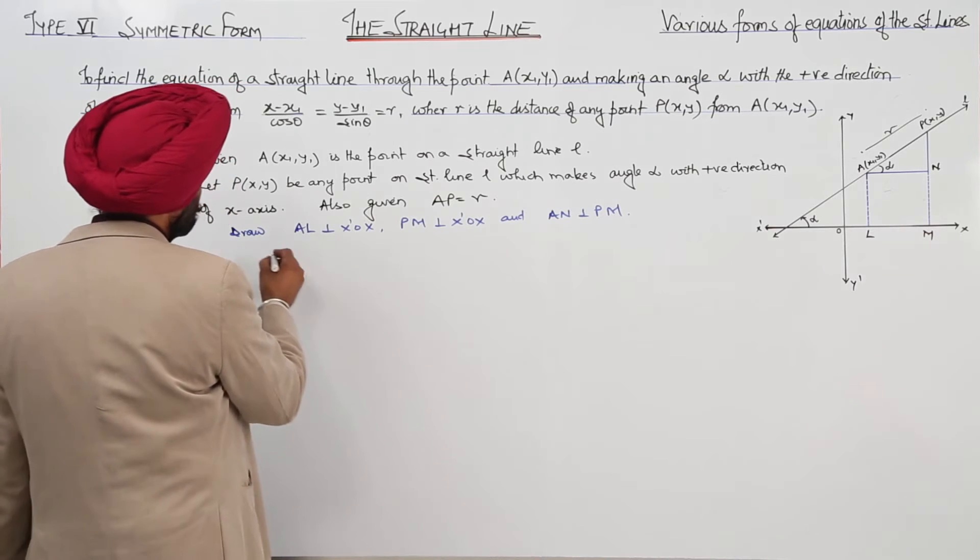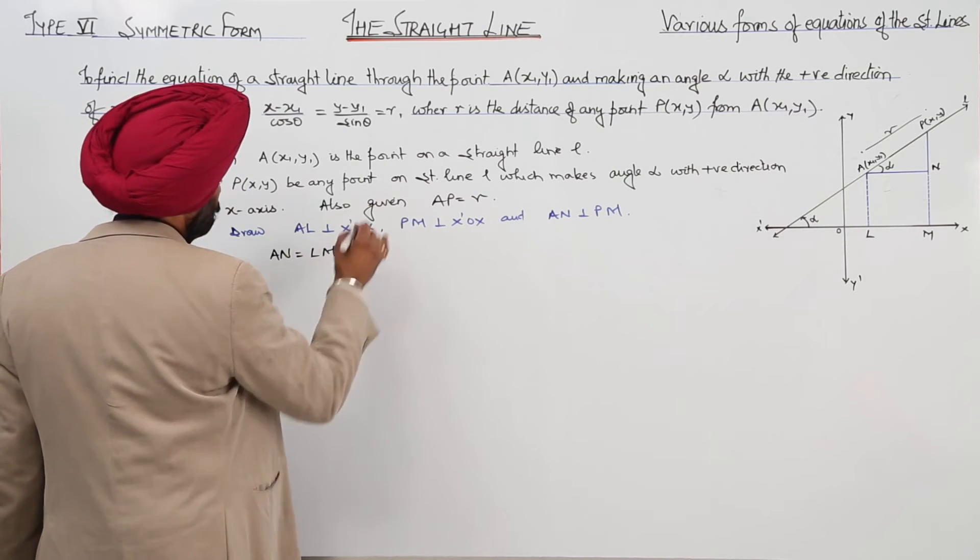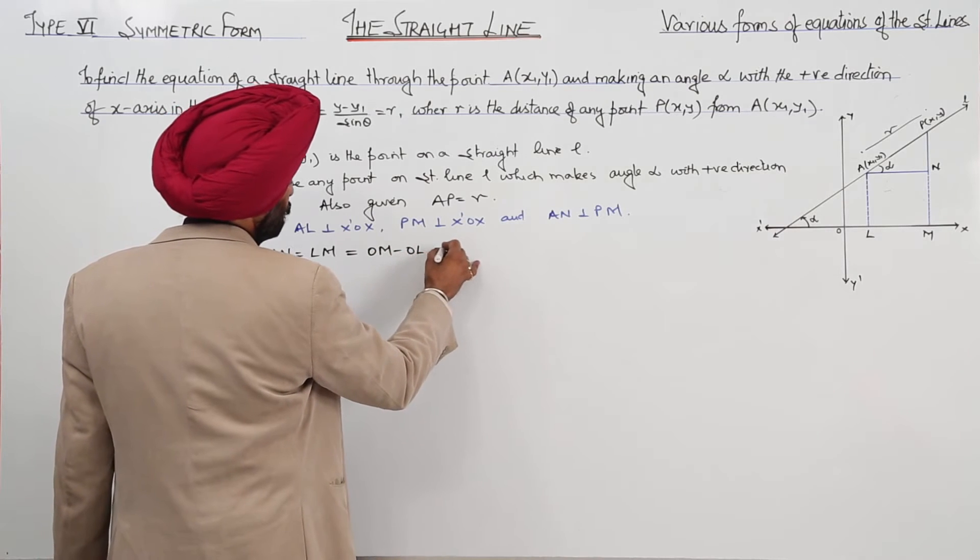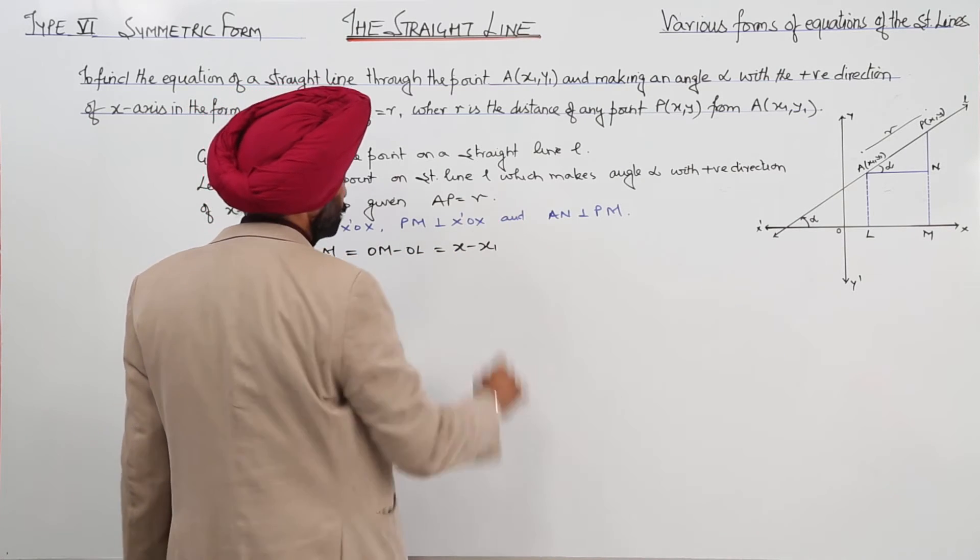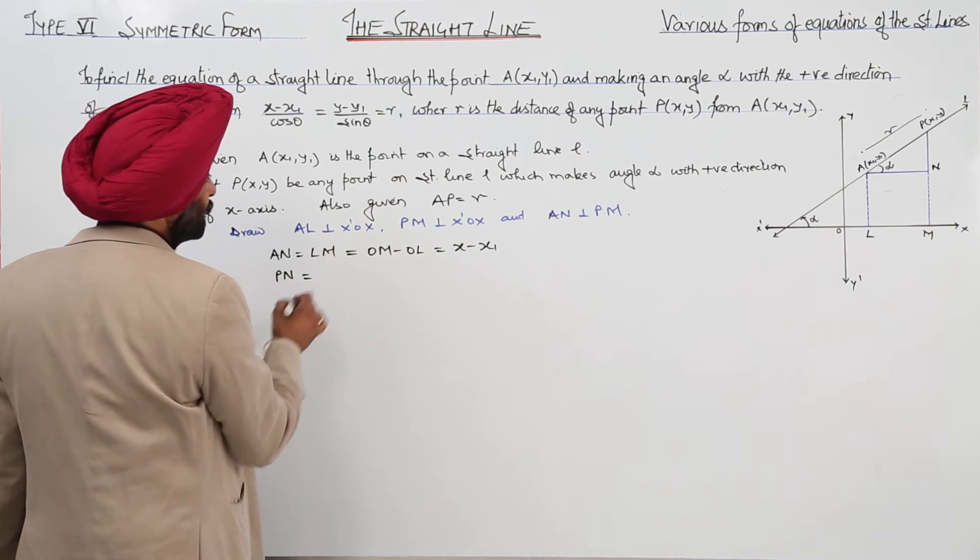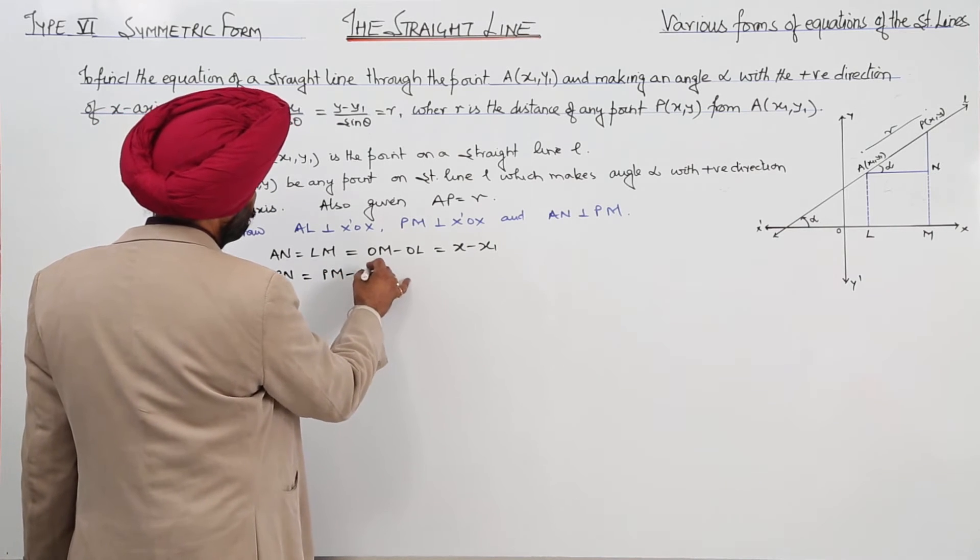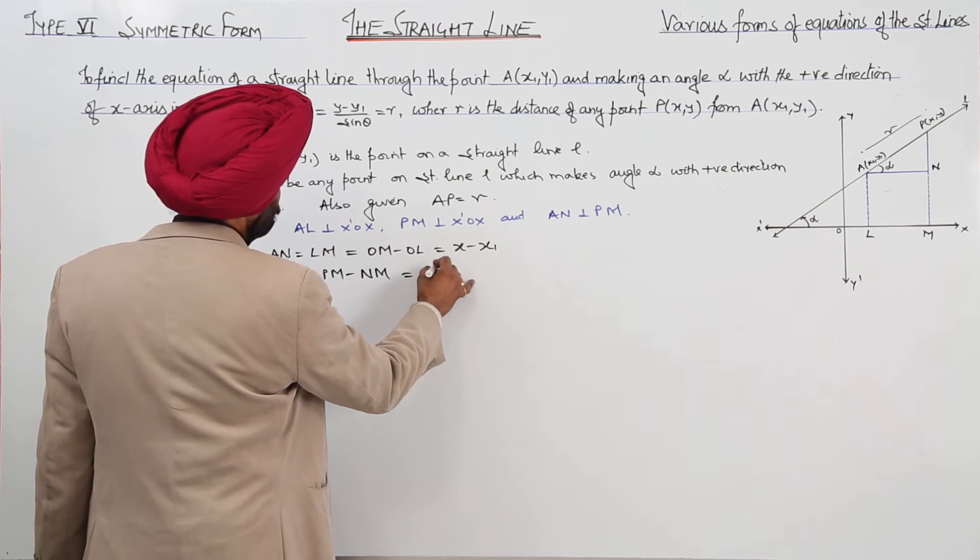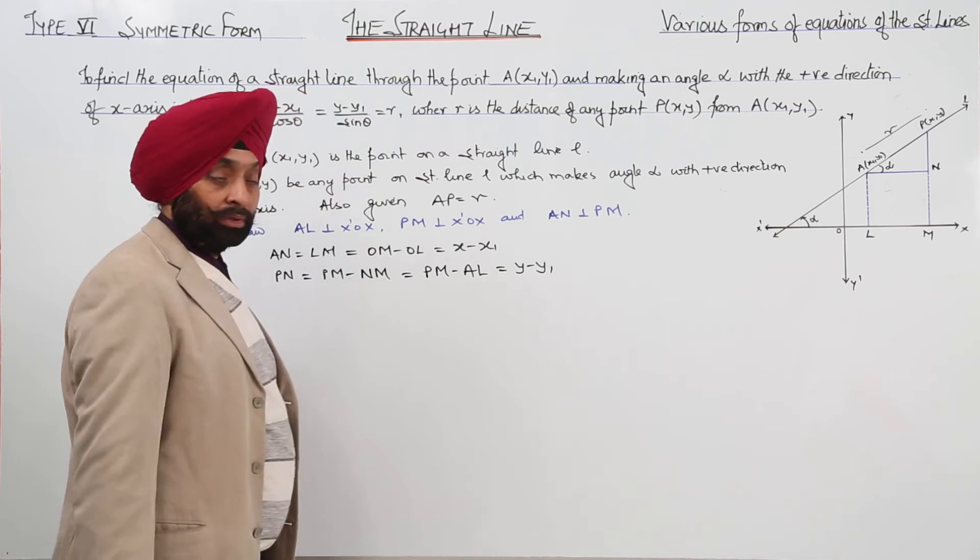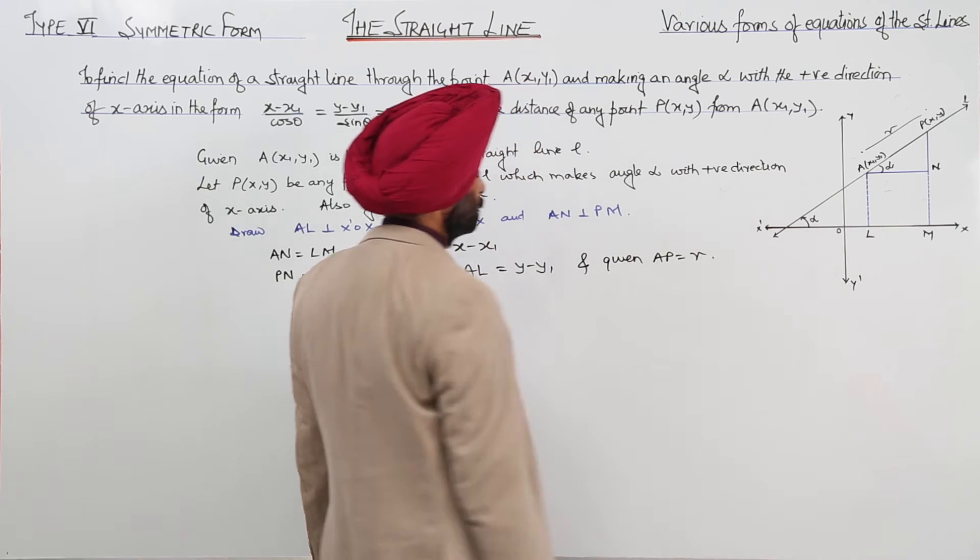Now, AN is equal to LM. LM is equal to OM minus OL, and this is x minus x1. Now, PN, PN is equal to PM minus NM. This is equal to PM minus AL, so this is equal to y minus y1, and given AP is equal to r.